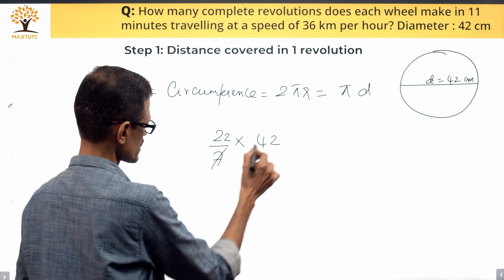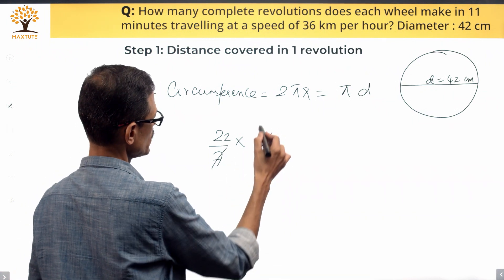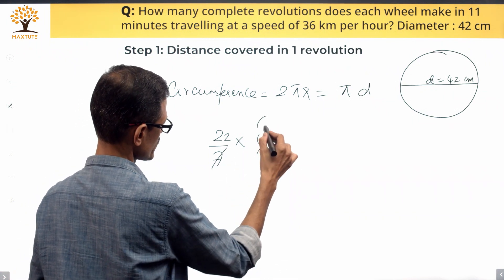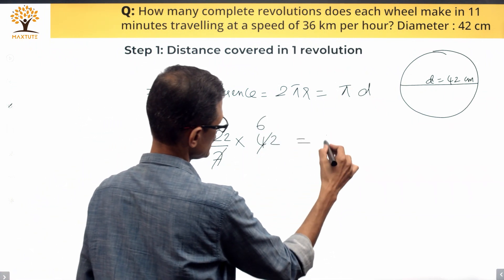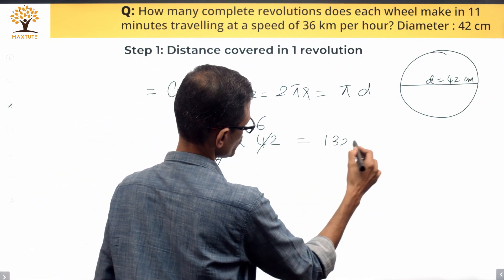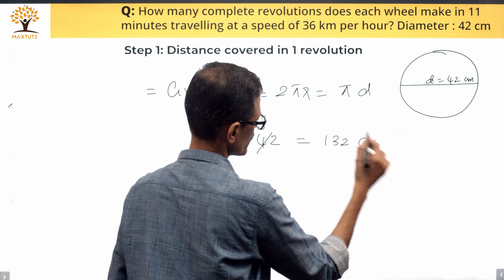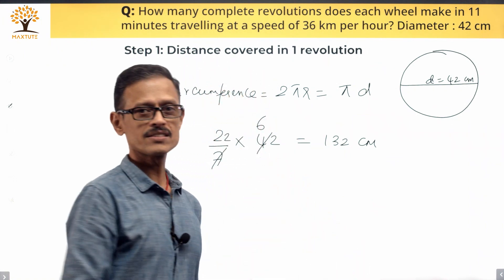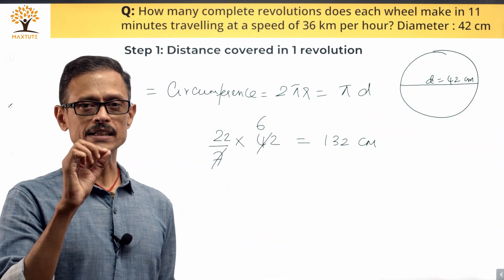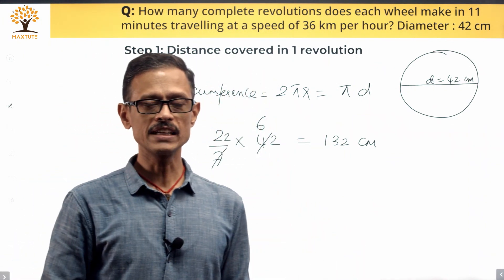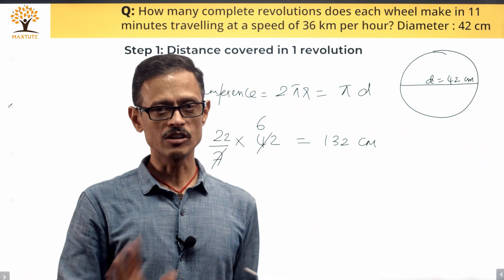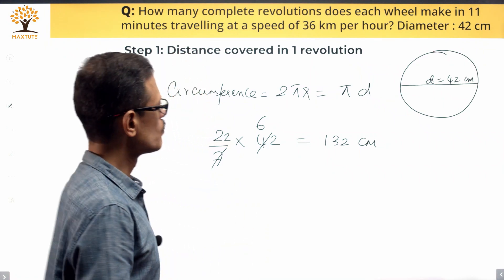Cancel the 7 with the 42, leaving us with 6. So 22 times 6 gives us 132 centimeters — that is the distance covered by this wheel in one revolution.